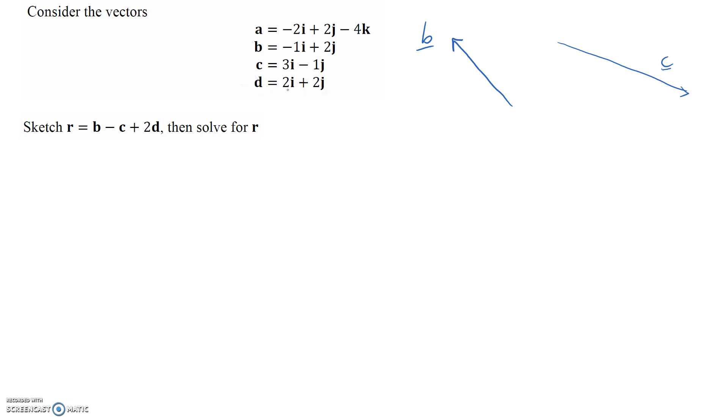The last one is vector d: 2i plus 2j. It's got positive x and positive y, which means it should look something like this. That's my d.